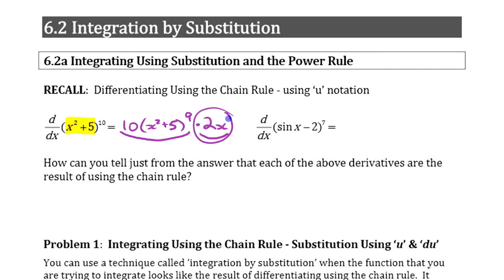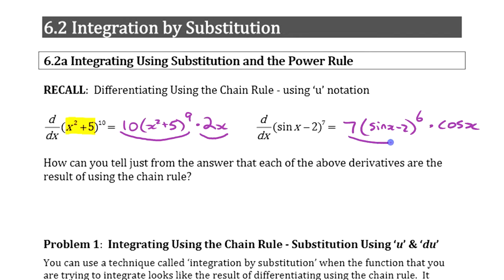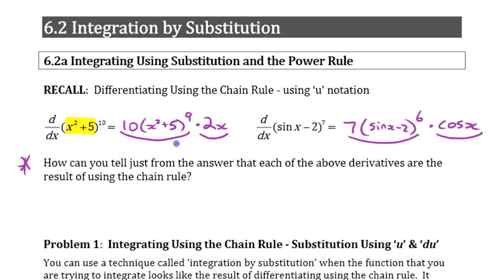You had this extra piece that showed up. Same with the second one: we've got 7 times that to the 6th, sine(x minus 2), and then times the derivative of the inside — cosine. Same thing again: derivative of the outside with respect to the inside, and then derivative of the inside. Now the question is, how can you tell just from that answer that those are the result of the chain rule? You have to learn to recognize that they have this extra piece that looks like the derivative of that inside function.